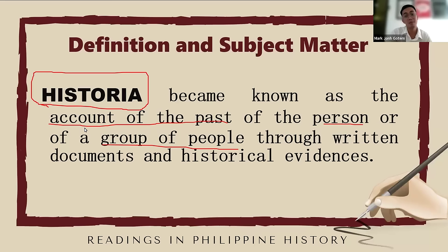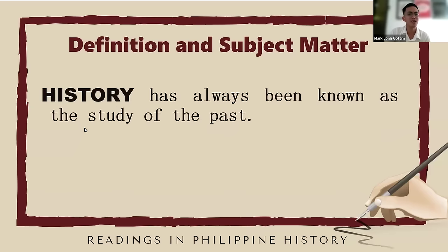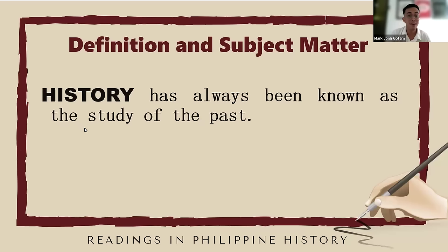Just like a biography of a person — an account of someone's life written by someone else — that is the account of the past of a person or a group of people. That is the Greek word of history: 'historia.' Another definition is that history is the scholarly examination and interpretation of past events, not just past events but also an interpretation of societies and human activities.